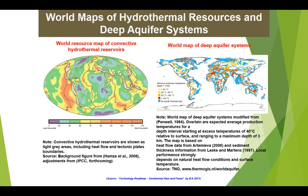These maps show the distribution of both convective hydrothermal reservoirs and deep aquifer systems across the globe that can be readily accessed for adaptation or conversion to human needs.